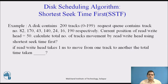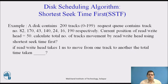We will explain Shortest Seek Time First with an example. A disk contains 200 tracks, numbered 0 to 199. The request queue contains track numbers 82, 170, 43, 140, 24, 16, and 190 respectively. The current position of the read-write head is given as 50. Calculate the total number of tracks movement by the read-write head using SSTF. Also, if the read-write head takes one nanosecond to move from one track to another, what is the total time taken?